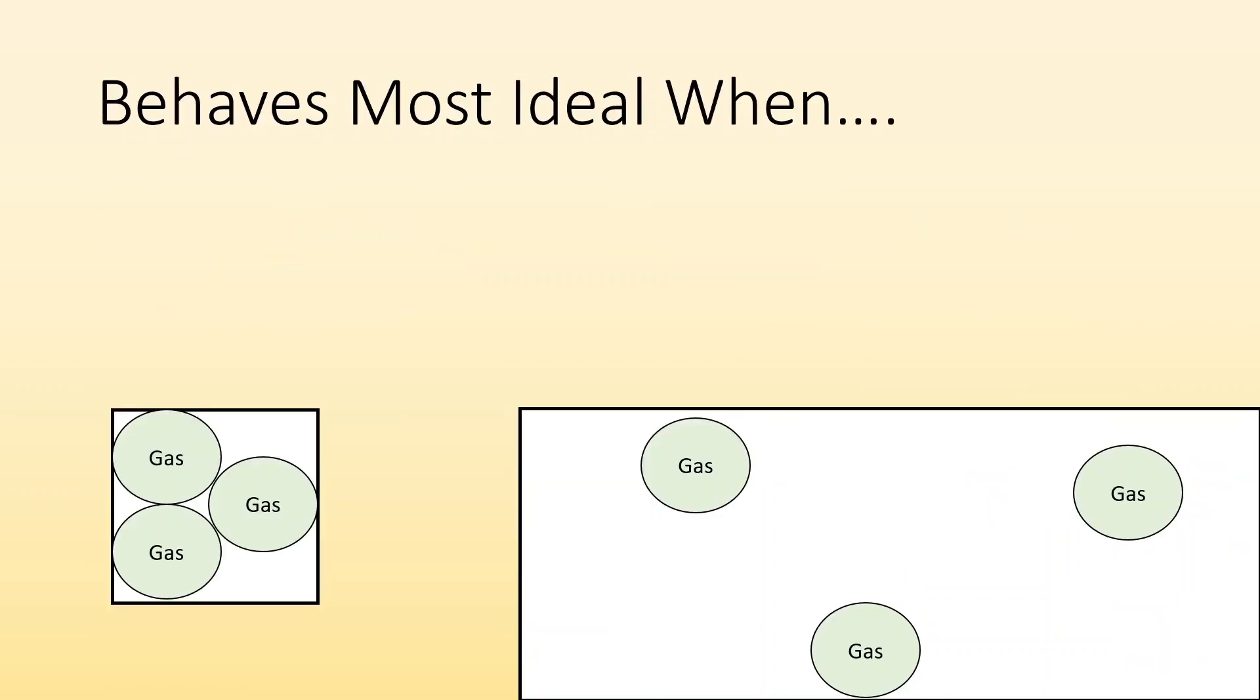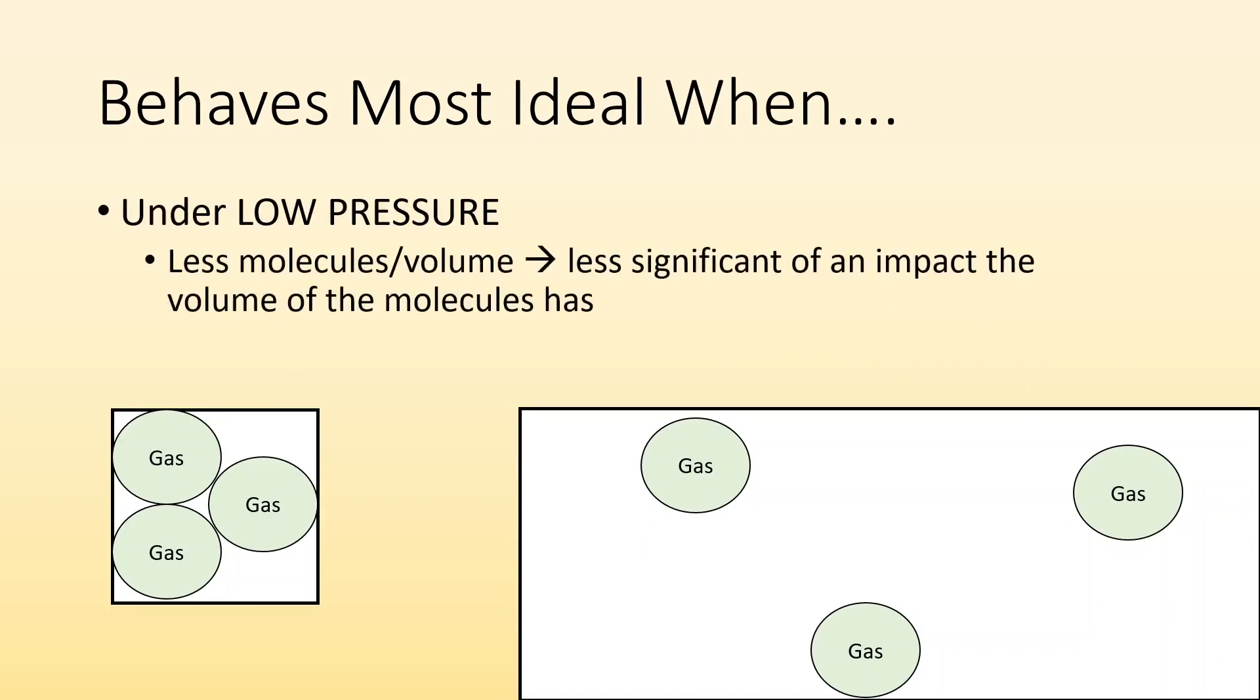When do these particles behave most ideally? Under low pressure, the lower the pressure means we have less molecules per that same volume, which means there's less significant of an impact that the volume of the molecules has. Under high pressure, we packed all these in, there's not a whole lot of free volume in that container left. But under low pressure, they got all this room to spread out, and the actual volume of the gas particles is low compared to the volume of the container.